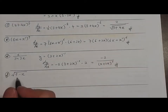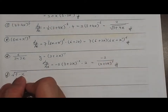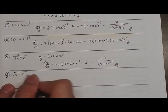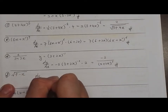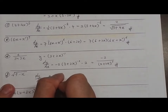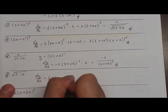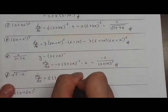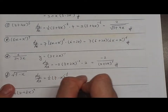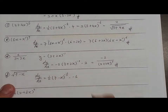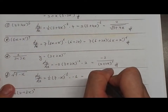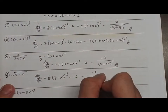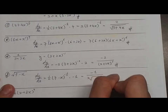Question F: y equals √(7 − x). dy/dx equals ½ multiplied by (7 − x)^(−½) multiplied by −1, giving −1 over (2√(7 − x)).